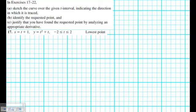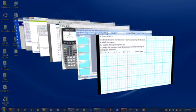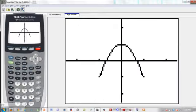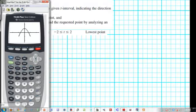Okay, so as we do this set of problems, we've got some new material to talk about as well. Let's talk about them. We want to sketch the curve over the t-interval indicating the direction on which it was traced. Well, probably the easiest way to do that would be plug it into the calculator.